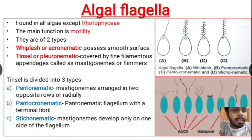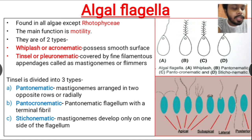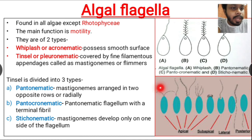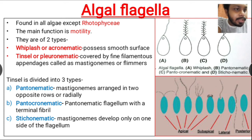Depending on the position of the flagella in the cell, algal flagella are also divided into further types. If the cell is moving in an upward direction, the front side is anterior and the back side is posterior. If the flagella are present at the top of the front side, this is called the apical type. If the flagella are inserted into the cell at the front side, it is the sub-apical type.